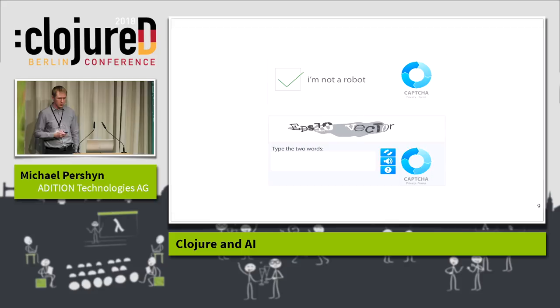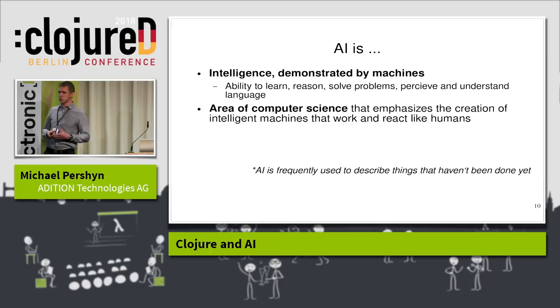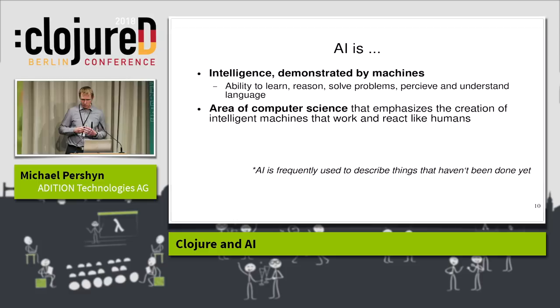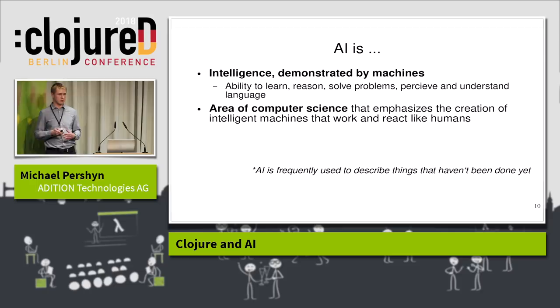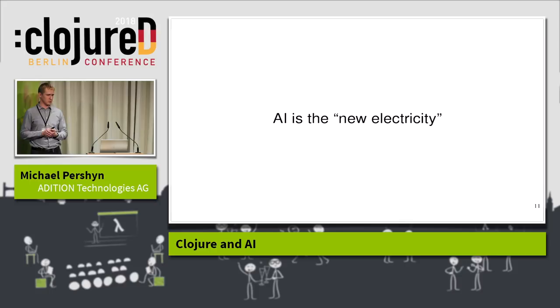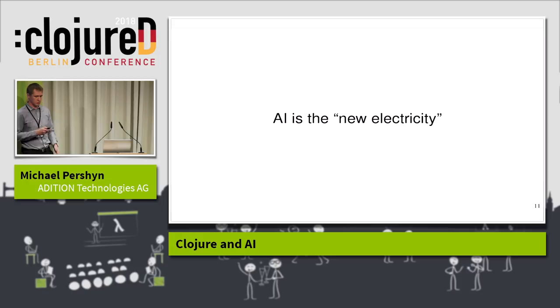The definition I ended up with is that AI is intelligence demonstrated by machines, and also a field of computer science that concentrates on these intelligent machines. AI is frequently used to describe things that haven't been done yet — this is called the AI effect. Lots of people are convinced that the impact of recent advancements in AI is comparable to the impact of the invention of electricity, and that's why I'm holding this talk here today.